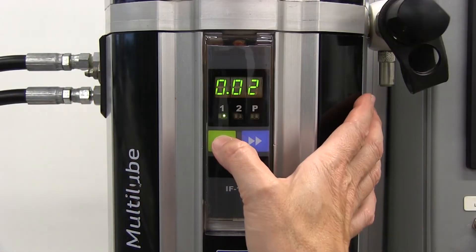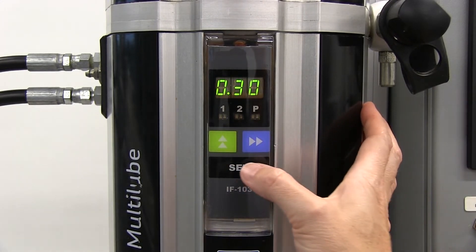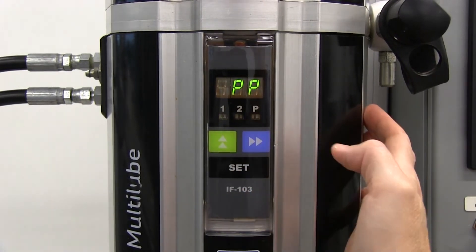Then start all over again by using the green up arrow to navigate the parameters, press set, etc.